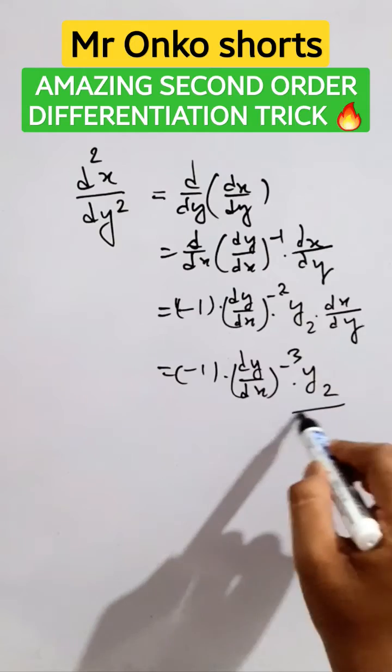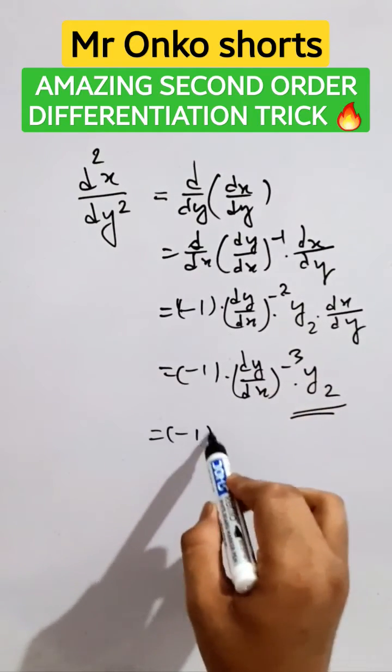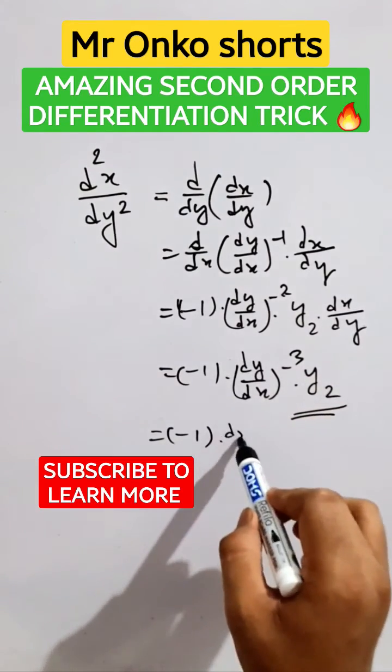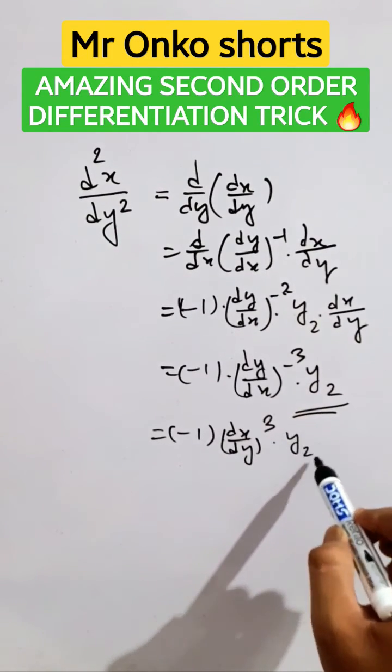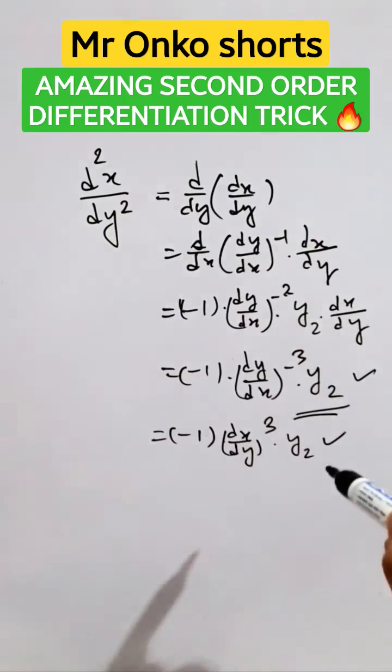This is the answer. In other ways, it can be written as minus one into (dx/dy) whole cube into y₂. Whatever the option is given, we can choose this. Subscribe.